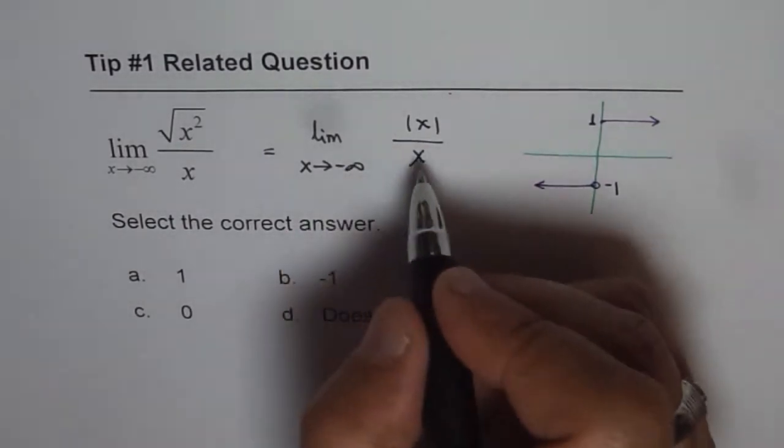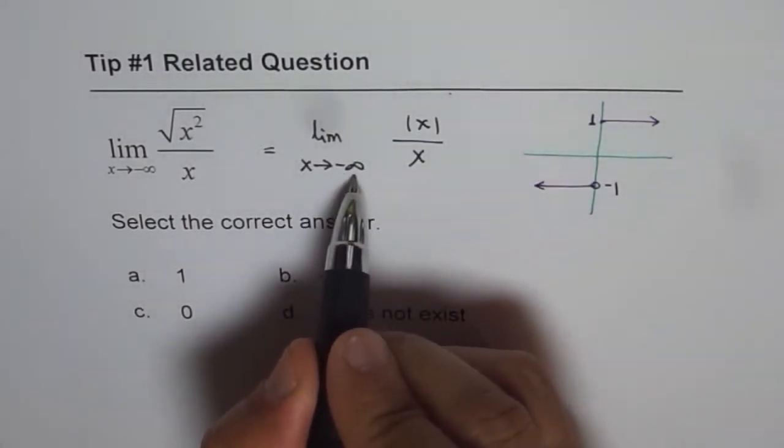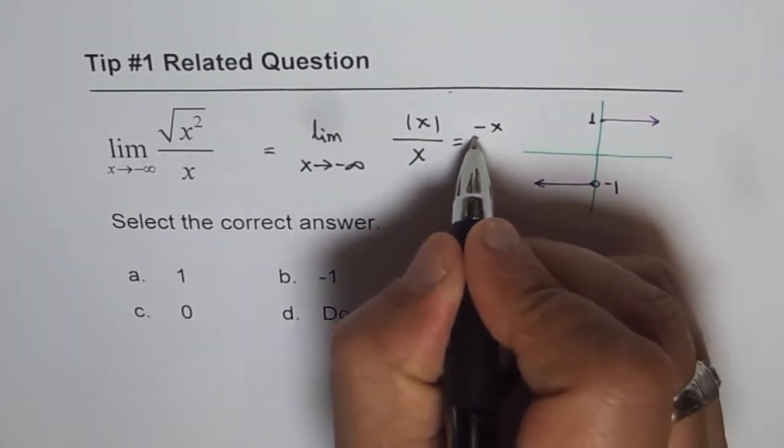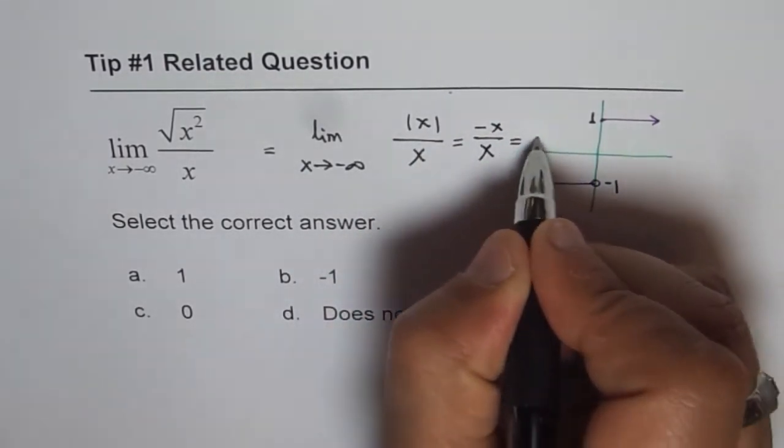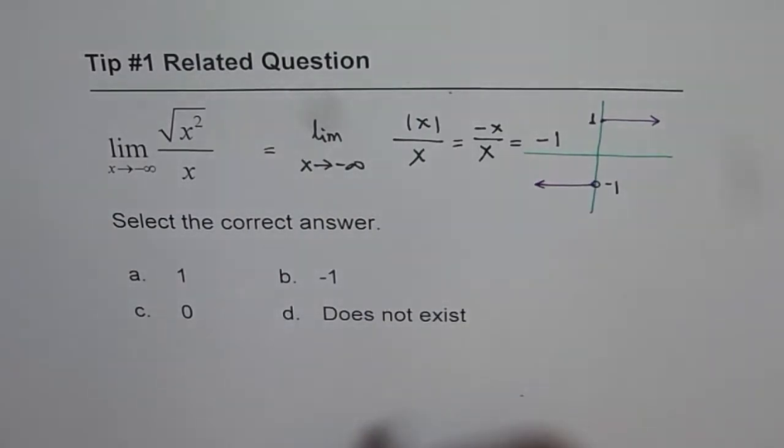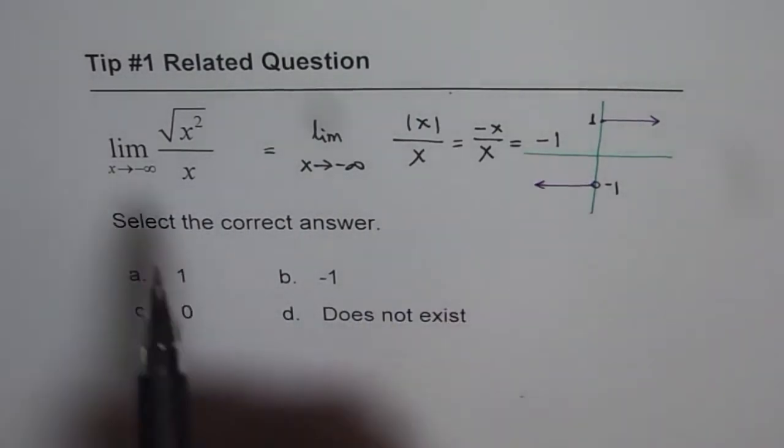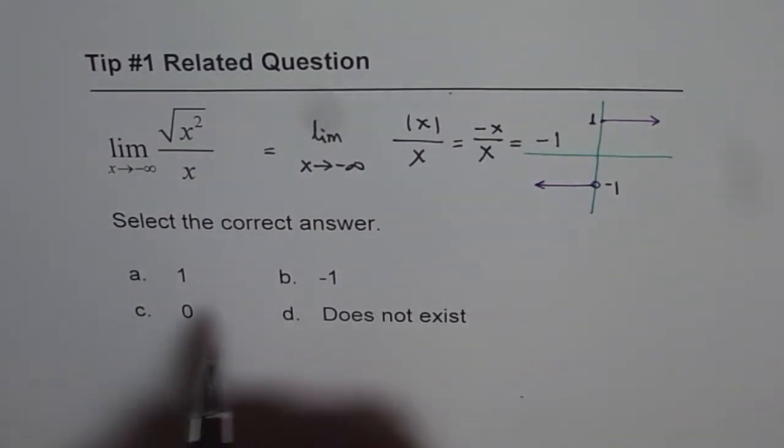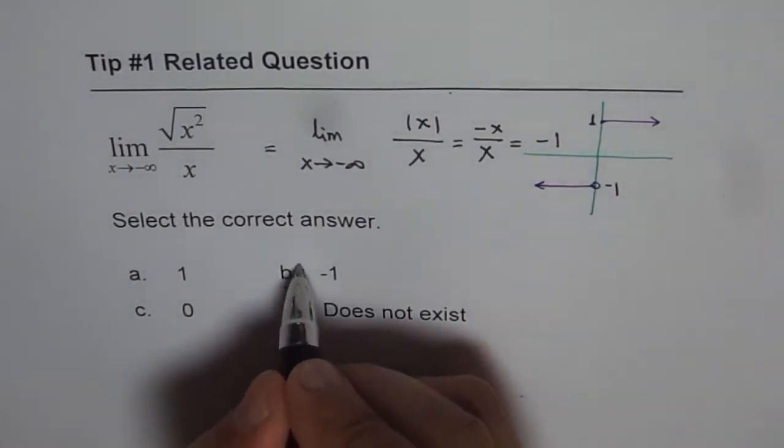So what you really know is when x approaches minus infinity, absolute x is approaching minus x. So we have minus x over x which is indeed minus 1. Do you see that? So the limit as x approaches minus infinity for the given function is minus 1. So the answer is b.